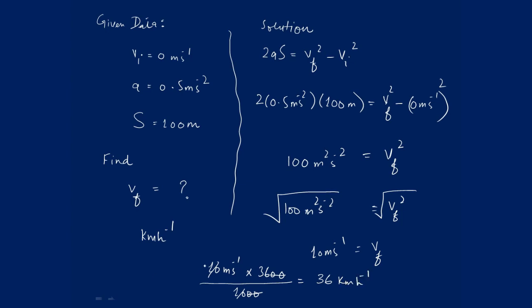The final velocity of the train in the required unit is 36 kilometers per hour. That's all about the numerical 2.6. If you understand this problem, then like my video, share my video with your friends, and subscribe my channel. Thank you very much.